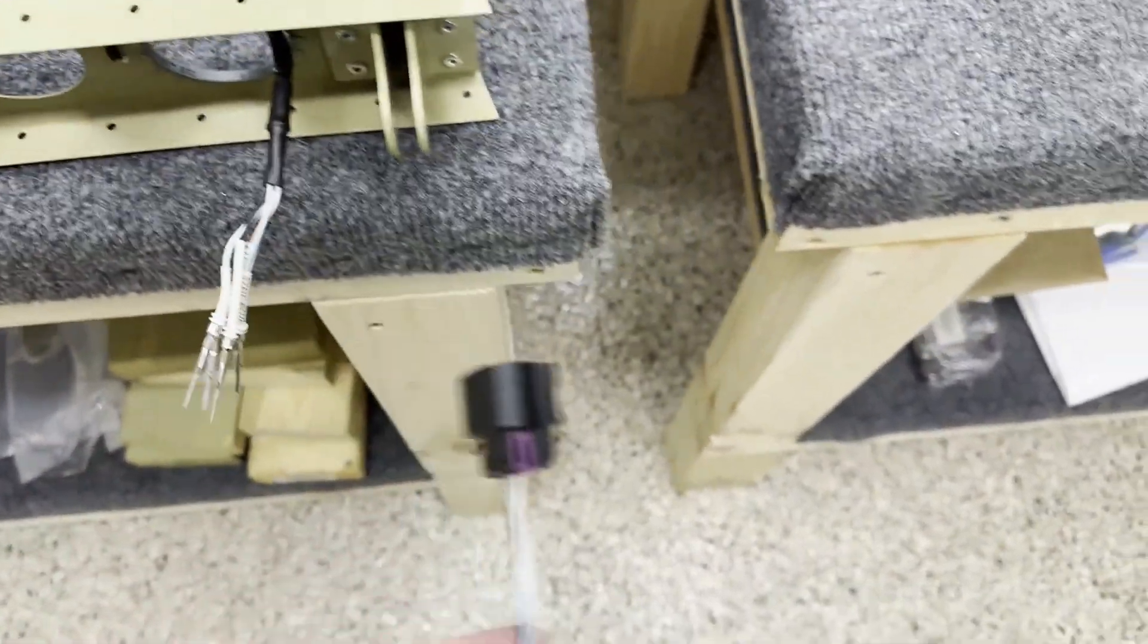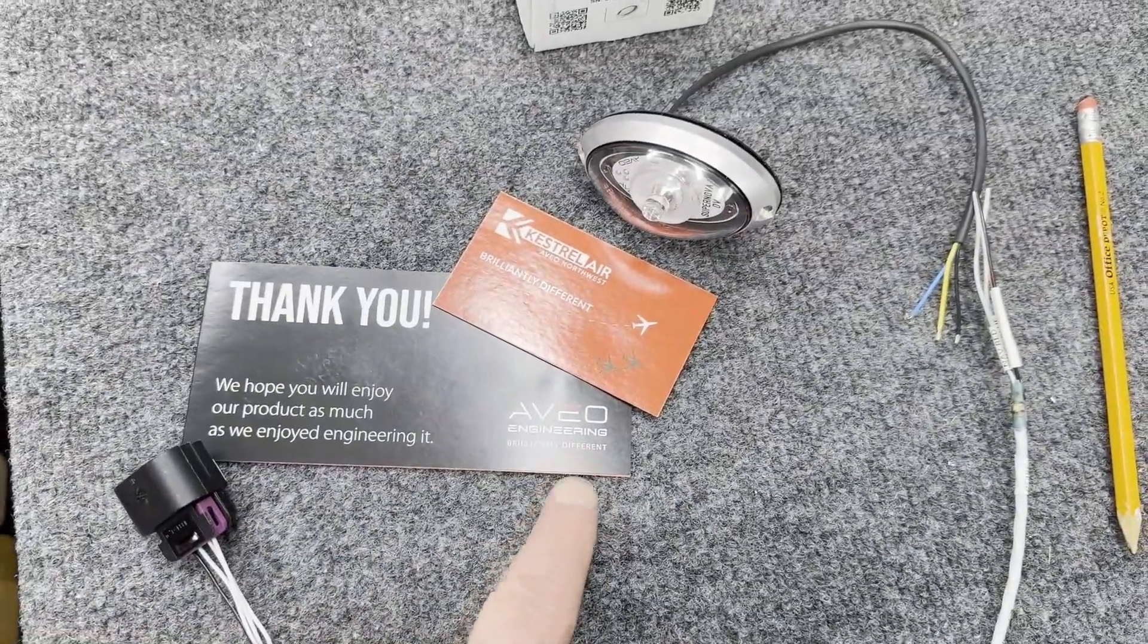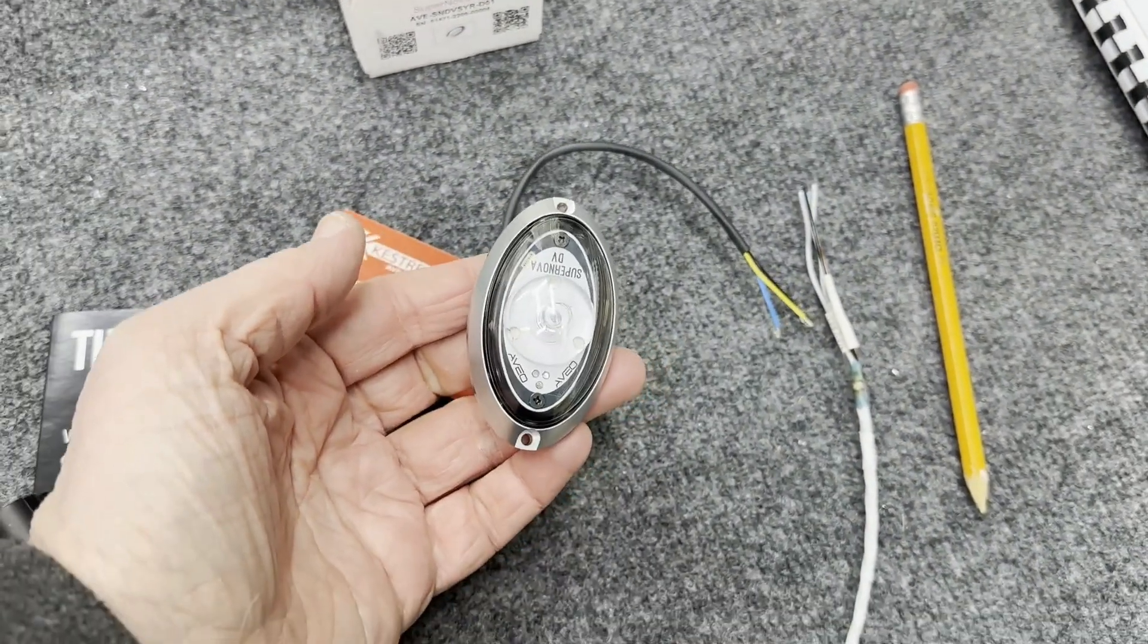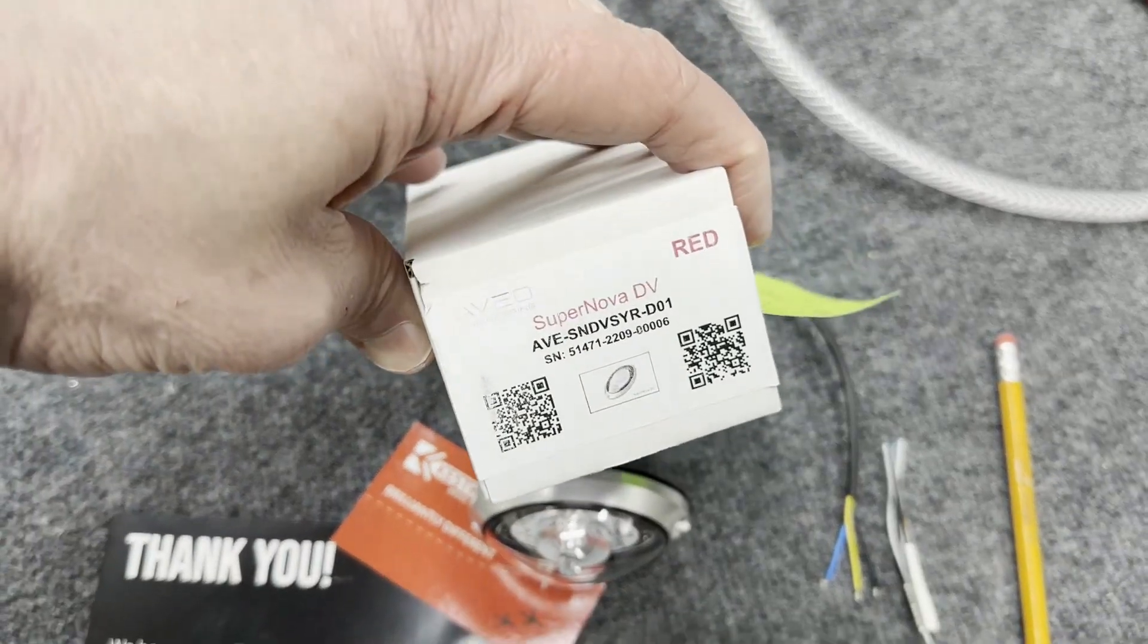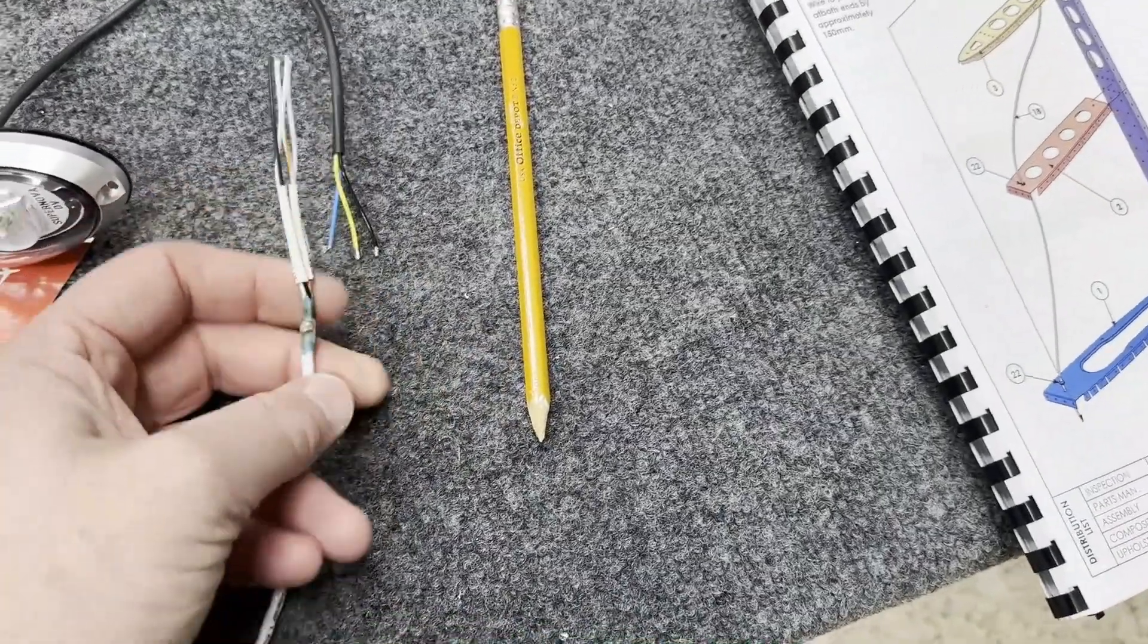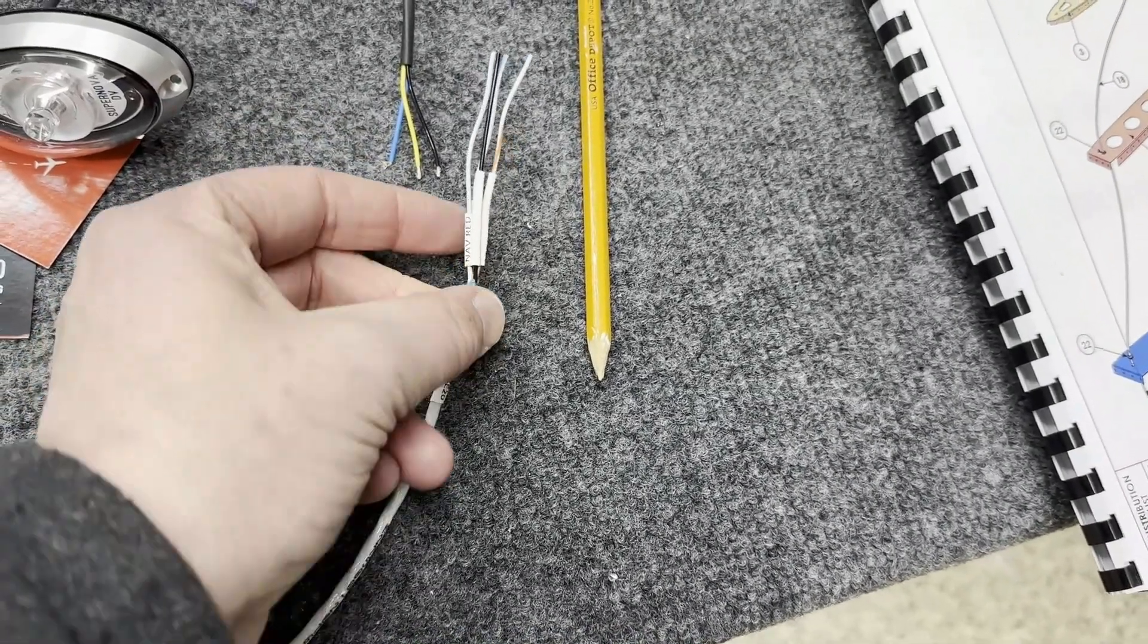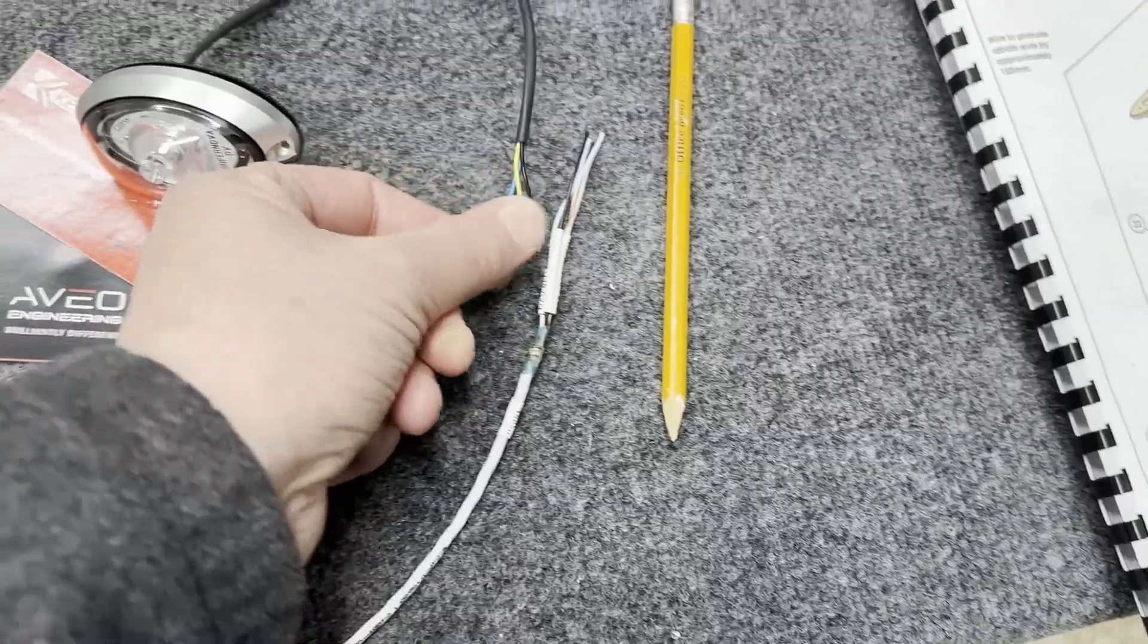I am using Avio Engineering's lightning - thank you Kestrel for providing this. This is the Supernova DV. You can see from the side of the box here it's this guy - it's a red beacon. It connects with four cables here, so we need to dead terminate one, which is nav red, which we don't need back here. We just need the strobe, the strobe sync, and the ground.